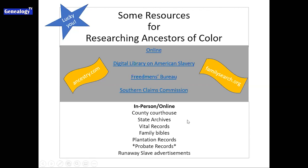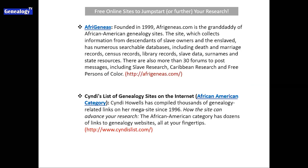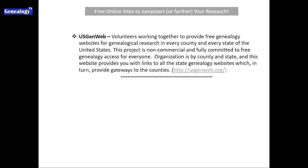Depending on what a location has digitized, some of this could be online or you would need to go in person to the courthouse, the state archives, vital statistics. You check family Bibles, plantation records, probate records, and those runaway slave advertisements. A couple of additional free online sites that will help jump-start your research would be AfroGenius at AfroGenius.com, Cyndi's List — go to the African-American category at CyndisList.com — and the U.S. GenWeb, which has a site for every county in every state in the United States. That site is run by volunteers and is continuously updated.